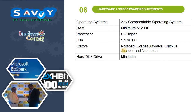Now, the hardware and software requirements. Minimum operating system: a compatible operating system. Minimum RAM: 512 MB. Processor: P3 or higher. JDK 1.5 or 1.6, but the present latest version is 13.0. Minimum editors: Notepad, Eclipse, JCreator, EditPlus, JBuilder, and NetBeans. Many more tools are available but we have mentioned only a few. Hardware includes a hard disk drive with minimum storage requirement for the project.